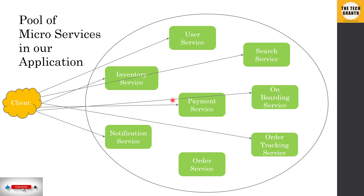The client is tightly coupled because, to make a call to each service, it must know the IP address and port where each service is deployed. For example, suppose the inventory service was deployed on an in-house Unix box and you decide to move it to the cloud. That changes the IP address and port, so you have to go back to the client and inform them of the new address.